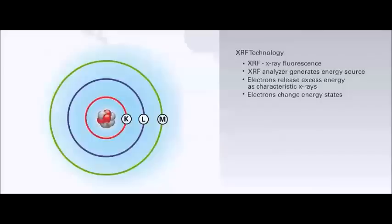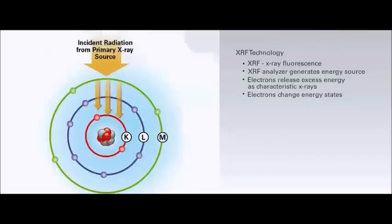For elements heavier than neon that contain three or more orbital shells, the three lowest potential energy orbital shells are the K shell, L shell, and M shell. When a sample is radiated by sufficiently high-energy photons generated either by a miniature x-ray tube or a sealed radioisotope source in the analyzer, electrons from the inner orbital shells of sample atoms are ejected.